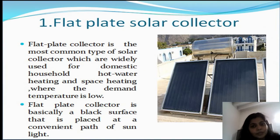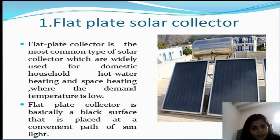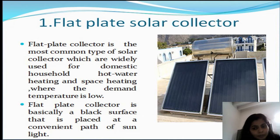In flat plate solar collectors, as we can see from the figure, it is the most common type of solar collector, which is used for domestic household purposes such as water heating and space heating, where the demand temperature is low. A flat plate collector is basically a black surface that is placed at a convenient position relative to sunlight, so as to absorb maximum sunlight and receive the maximum sun rays at an optimum position.